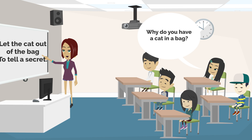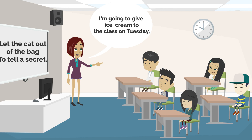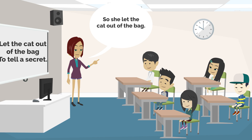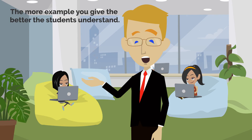Then say, 'Let me show you. I'm going to give ice cream to the class on Tuesday, but I don't want anyone to know — it's a secret. But I will tell her, and then she will tell everybody. It was supposed to be a secret between me and her, but she told the whole class. So she let the cat out of the bag.' The more examples you give, the better students understand.